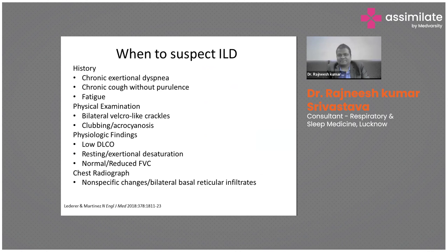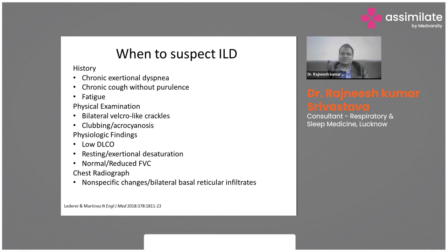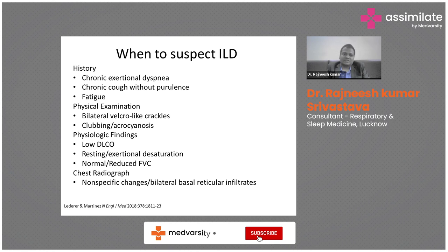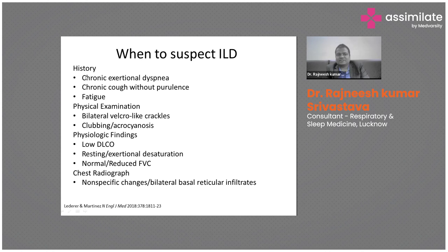The most important tool in approach is history. Any patient with chronic exertional dyspnea — breathlessness for one, two, three, or six months — indicates a chronic disease. Chronic cough with or without expectoration and fatigue all point toward a chronic condition and help clinch the diagnosis that the patient may be having some form of ILD.